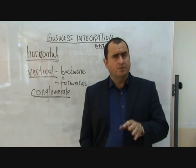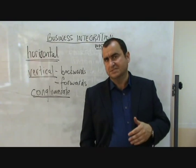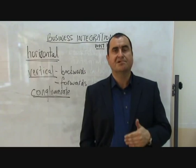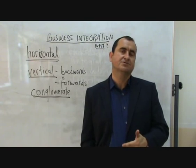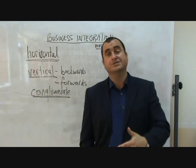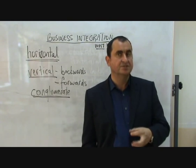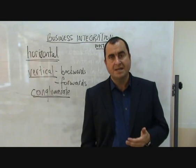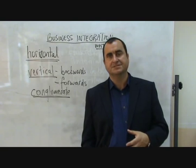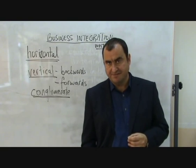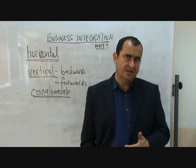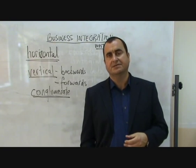First let's clarify what stages of production are. We divide businesses into operating in one of three stages of production: the primary sector, the secondary sector, and the tertiary sector. The primary sector is concerned with the extraction of raw materials — mining, farming, and fishing are examples. The secondary sector is manufacturing — making things — everything from baking bread to manufacturing cars.